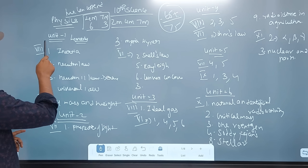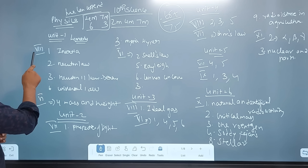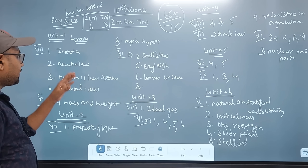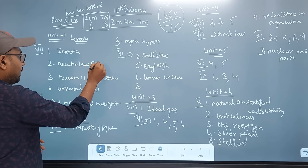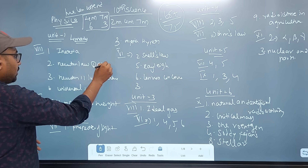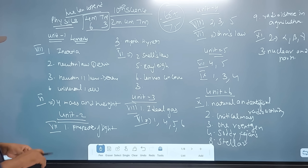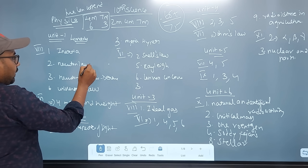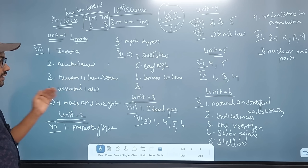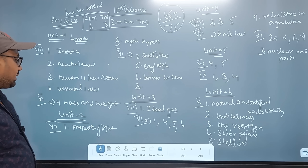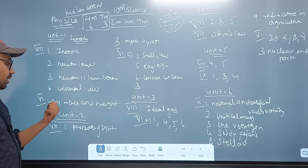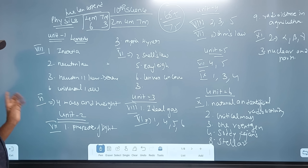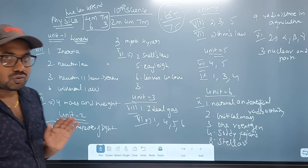Now, we are going to talk about Physics Unit 1. In Roman number 8: Inertia and Newton's Law — Newton's Law derivation is important. Universal Law of Gravitation — definition and diagram. Mass and weight is the 4th question, Roman number 6.